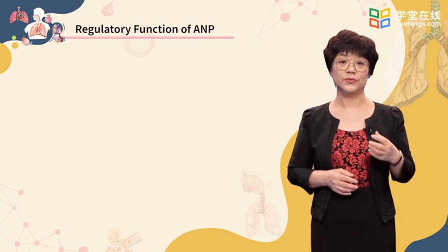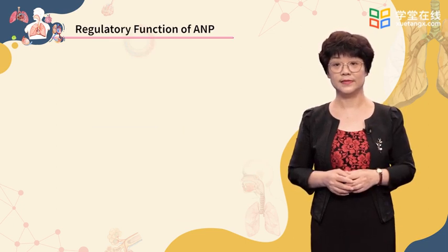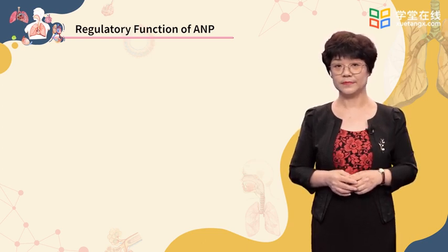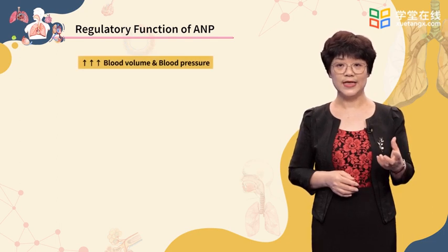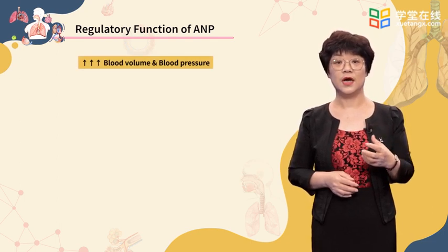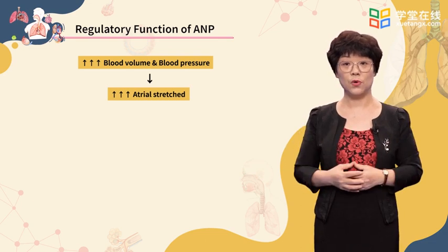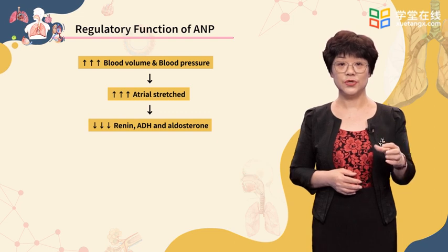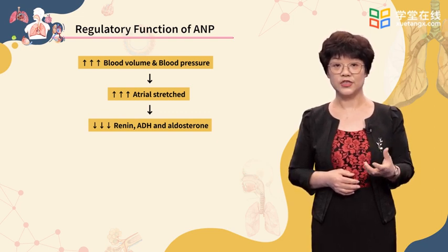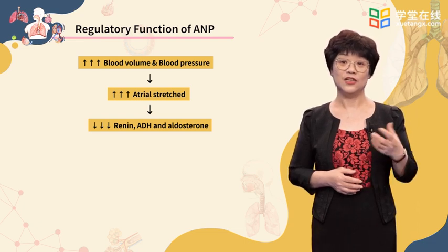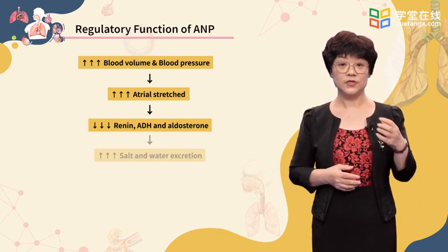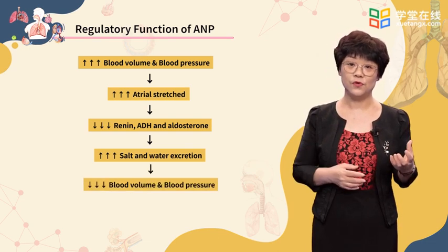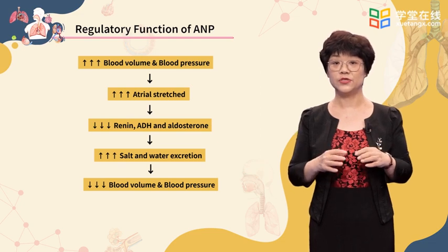Another hormone related to water and salt balance is the atrial natriuretic peptide, ANP. ANP is released when the atria are stretched due to increased blood volume and pressure. ANP causes decreased secretion of renin, ADH, and aldosterone. The overall effects ultimately result in increased excretion of sodium and water, and therefore blood volume and pressure decrease.